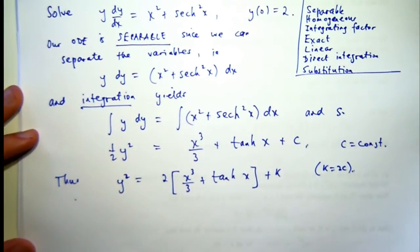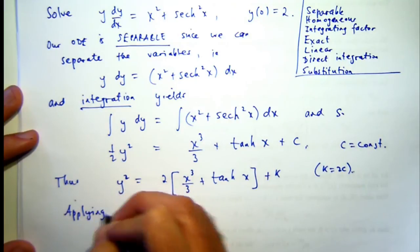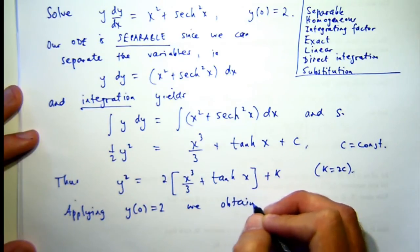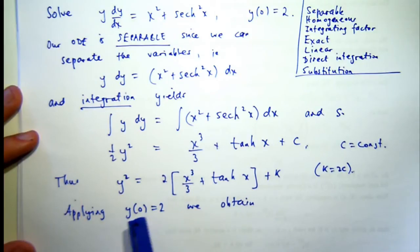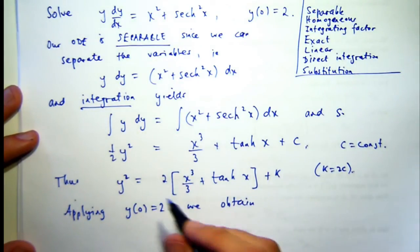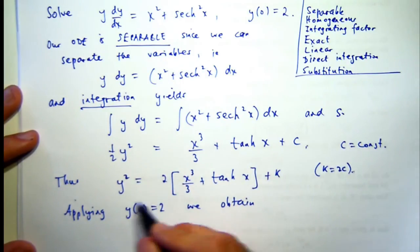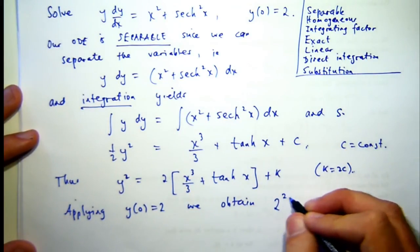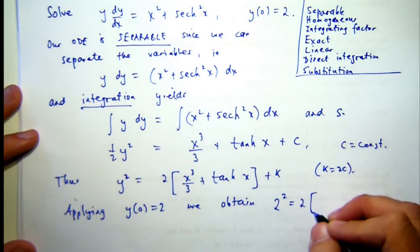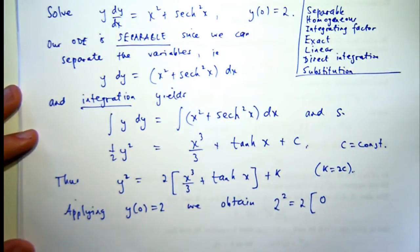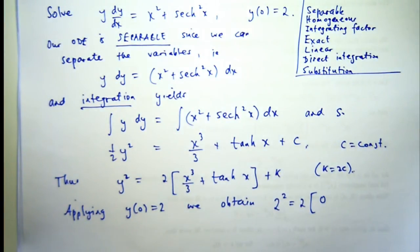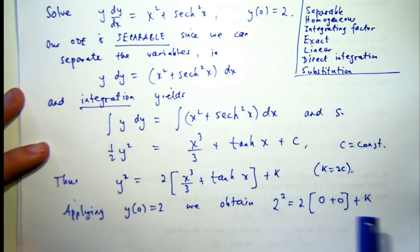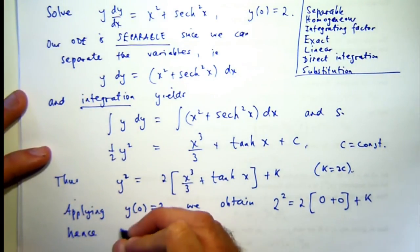So we know that when x equals 0, our solution y has the value 2. So just going back to our general form of solution, we can use this information by substituting or replacing y with 2 and x with 0. So the left-hand side is just 2 squared. This term's going to be 0 because we're plugging in x equals 0. Hyperbolic tan of 0, well, the curve goes through the origin, so that's also 0. So what will K be? K will be 4.